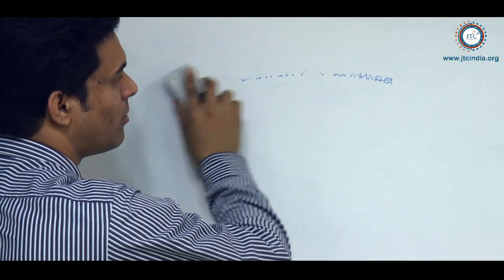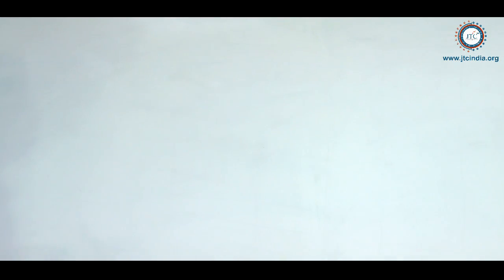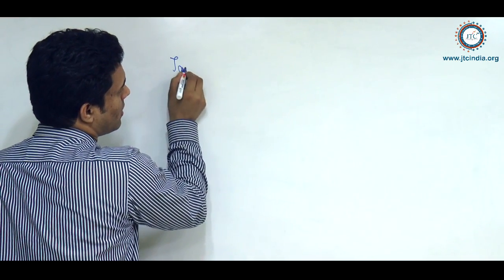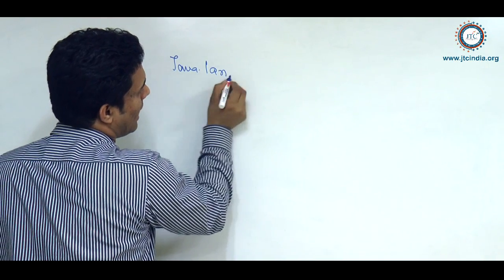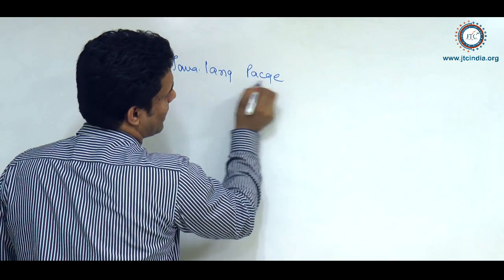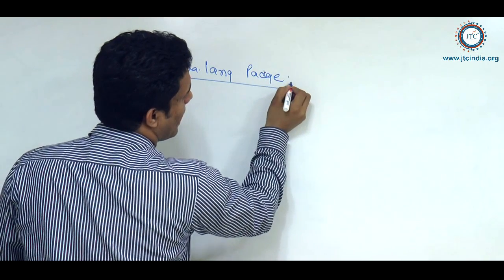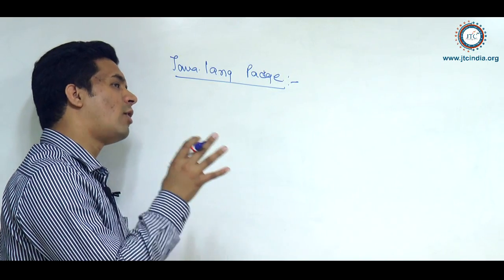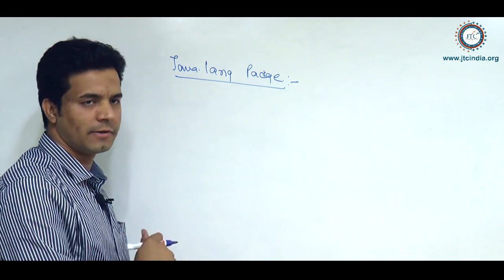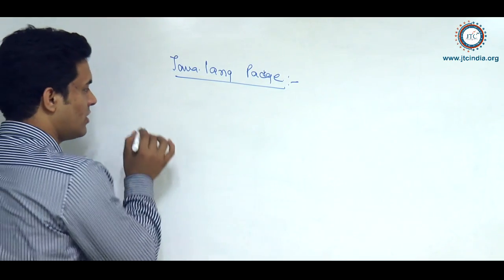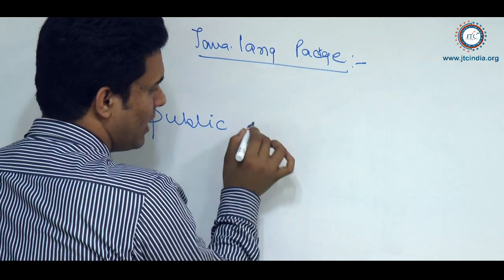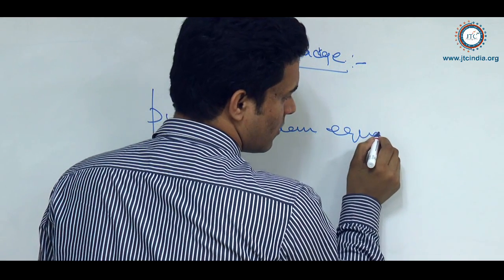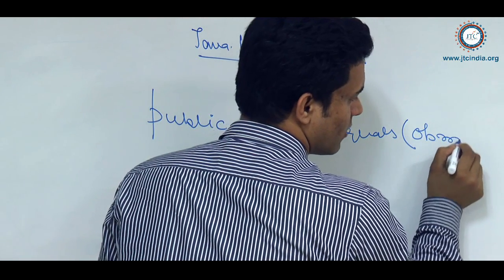The equals method we are talking about is available inside the Object class. The Object class is available inside the java.lang package, and inside that package the Object class is there, and inside the Object class the equals method is there. The equals method has the signature: public boolean equals(Object o).